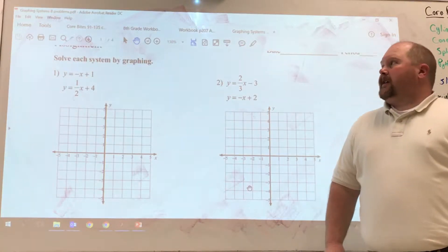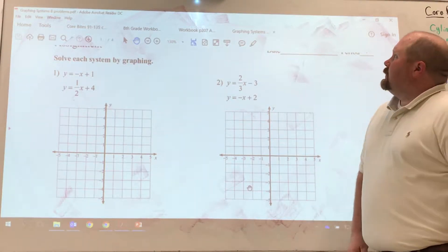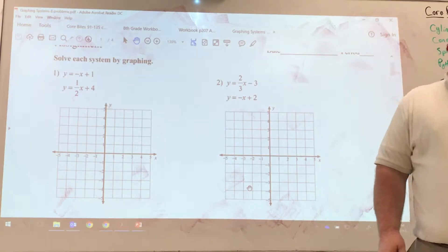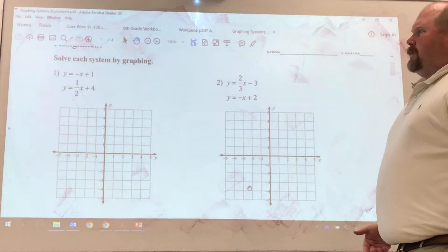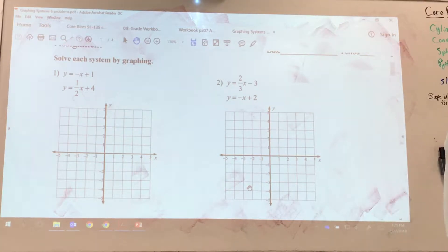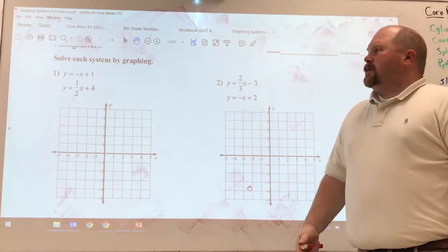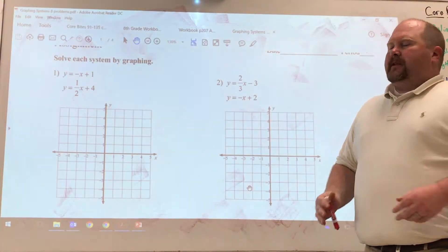All right, so this is Tuesday's handout, graphing systems, eight problems is how it's titled. So I wanted to do at least one example from each side. On the front side, you have four problems, four systems problems, and they're already in slope-intercept form. So what that means to you is the equations are ready to graph the way they're written.